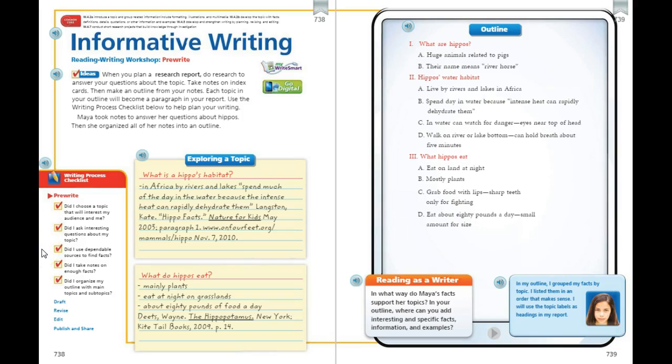Did you use dependable resources to find facts? Did you find current facts? Did you find reliable ones? Did you take notes on enough facts? Do you have enough things about each of your questions and headings? And then did you organize your outline with main topics and subtopics?